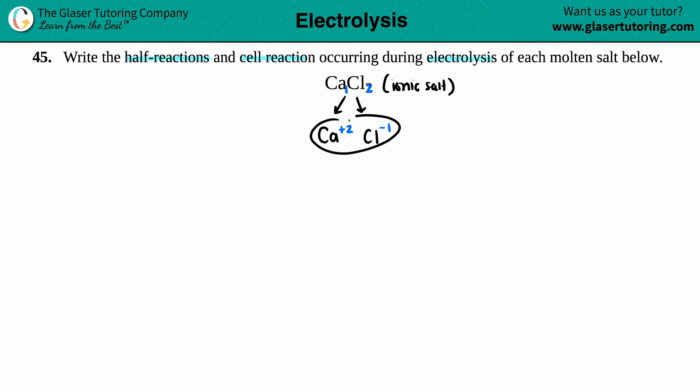Now, since this is what we started with, that's the start of the half reactions. So I'm going to start off with calcium, which is a two plus, and then I'm going to start off with the chlorine, which is a minus one.